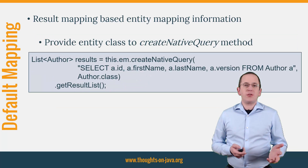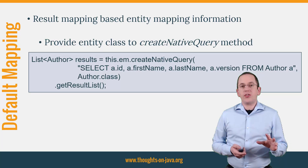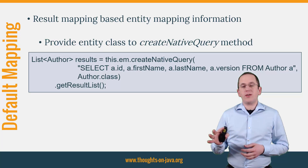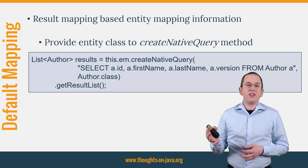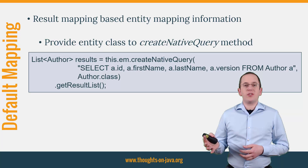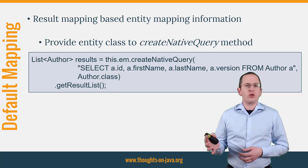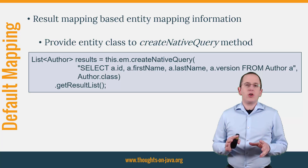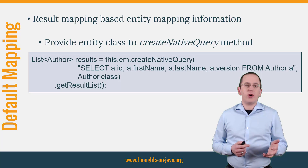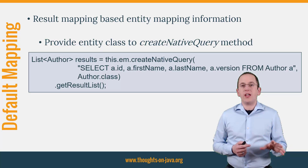The easiest way to map a query result to an entity is to provide the Entity class as a parameter to the CreateNativeQuery method of the EntityManager and use the default mapping. The code snippet here on the slide shows an example with a simple query. In a real project, you would use this with a stored procedure or a very complex SQL query. The query needs to return all properties of the entity and the JPA implementation will try to map the returned columns to the entity properties based on their name and type.